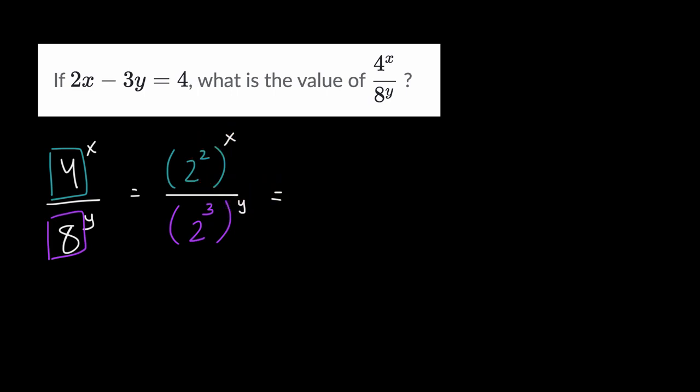This whole numerator is going to be equal to two to the two times x power, or two to the two x power. And then it's going to be divided by this entire denominator, two to the third to the y, so it's going to be two to the three times y power, two to the three y power.